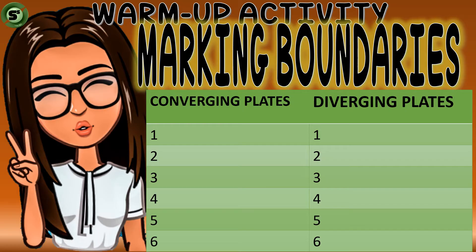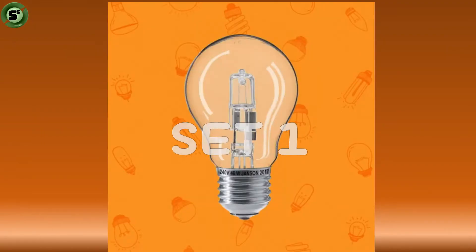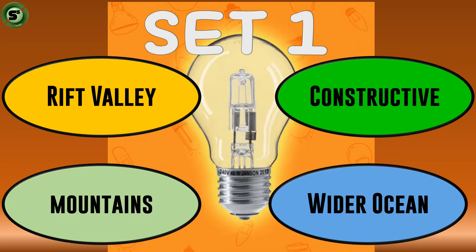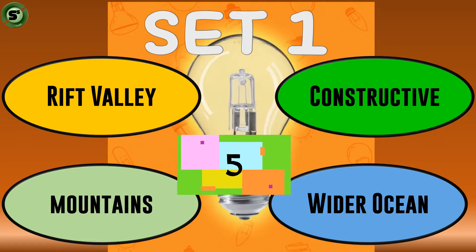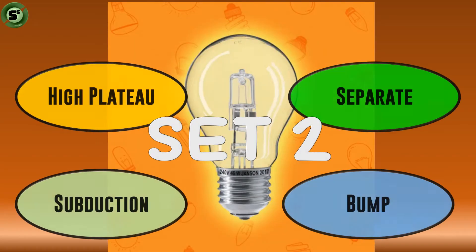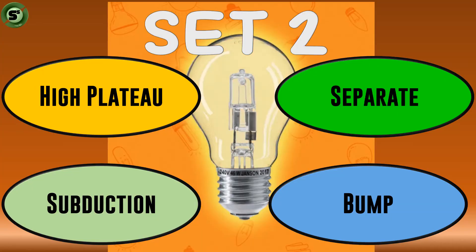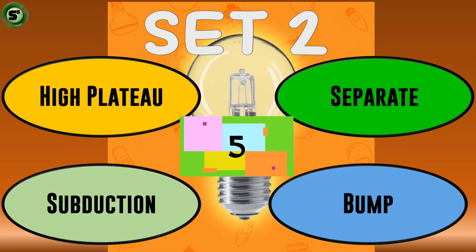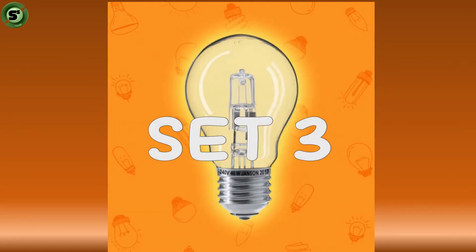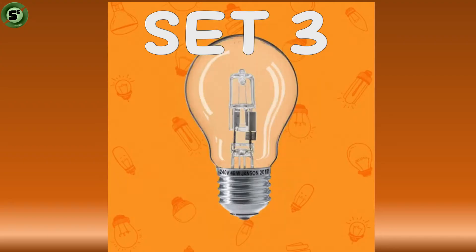Are you ready? Then grab your pen and use your brain cells. These are the words for set one — mark their boundaries now. Okay, relax. These are the words for set two — mark their boundaries now. We are almost done. Now mark the boundaries of set three. Start writing your answer.